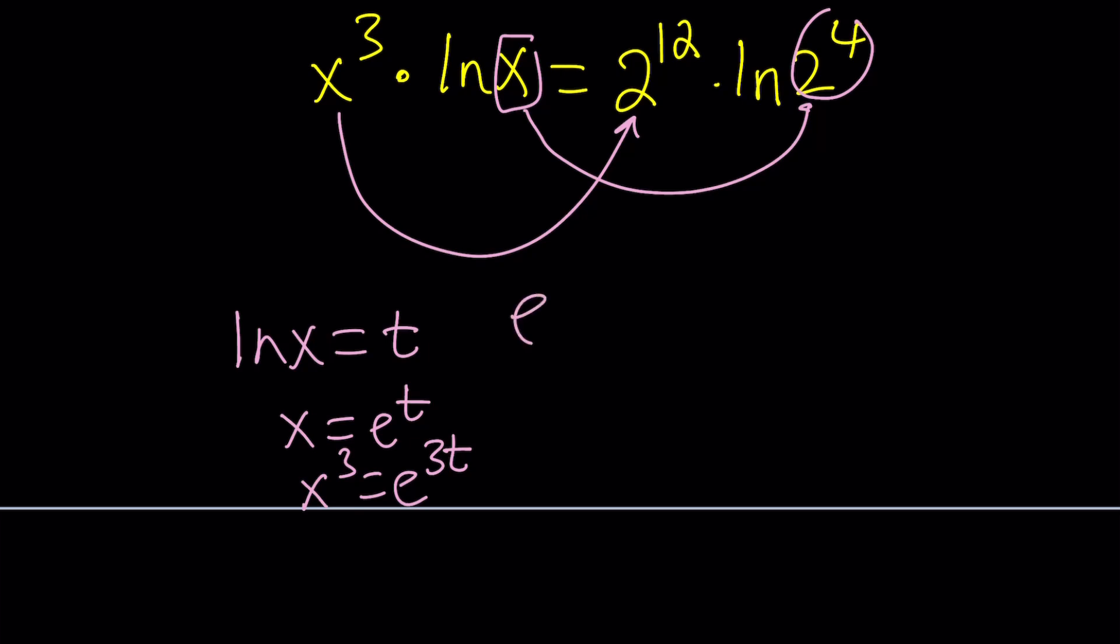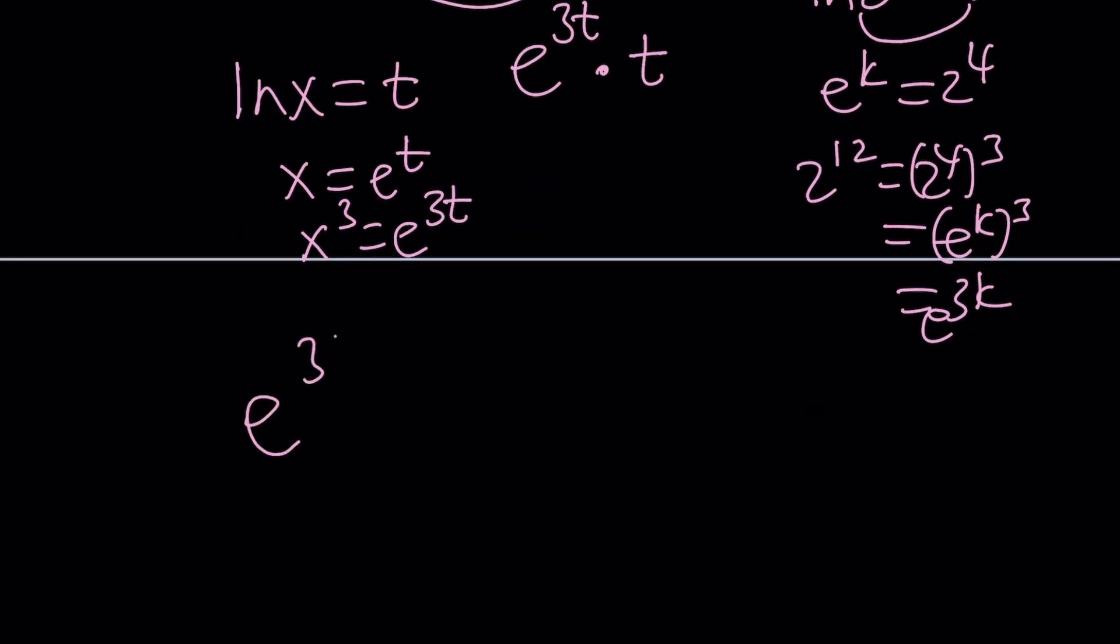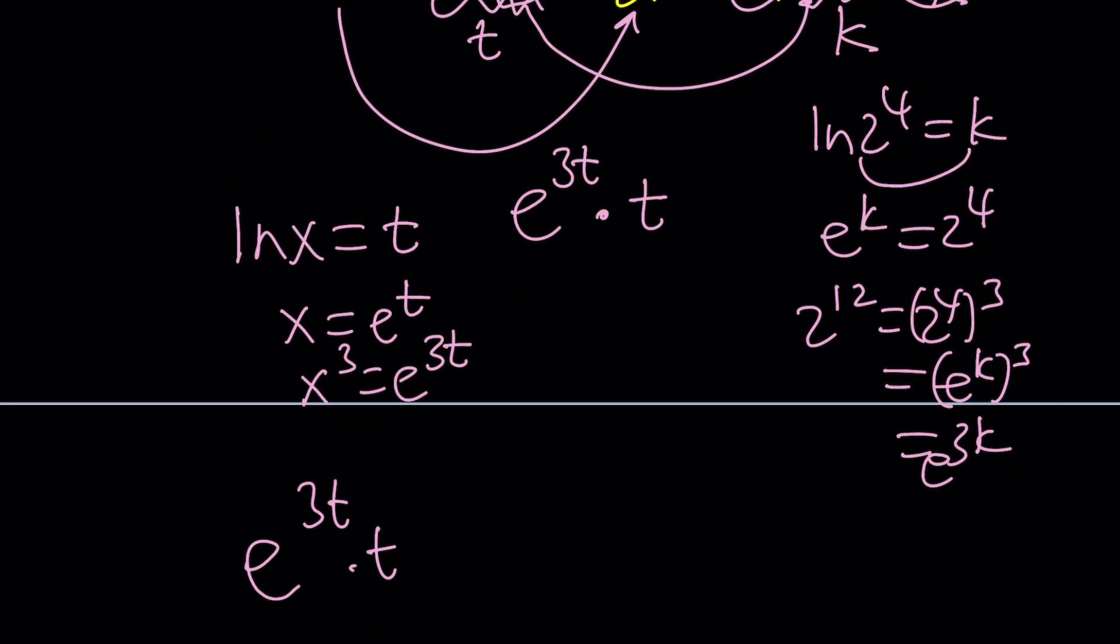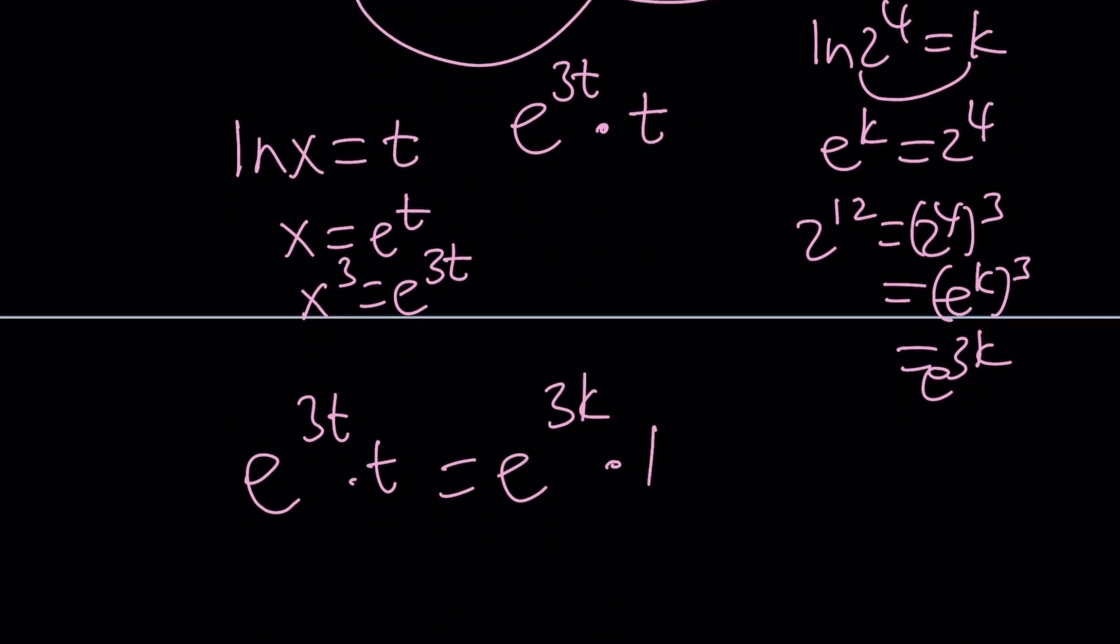That's going to give us x cubed will be replaced with e to the power 3t, and ln x will be replaced with t. And then on the right-hand side we're going to do something similar. Let's call this k for constant. So I call this one t, and now I'm going to call this one k, the whole thing with the log. ln 2 to the 4th equals k. And then from here, e to the k is equal to 2 to the 4th, which is 16. And 2 to the 12th is just going to be 2 to the 4th cubed, which is e to the k cubed, which is e to the power 3k. Let's go ahead and make those replacements. We get e to the power 3t times t equals e to the power 3k multiply by k.